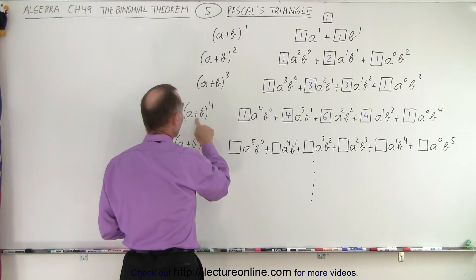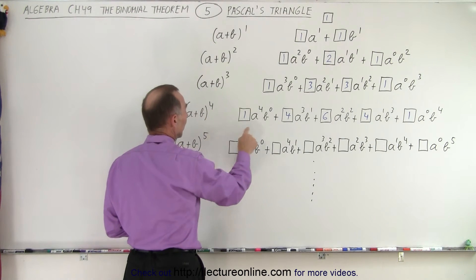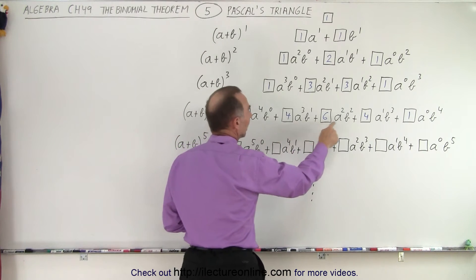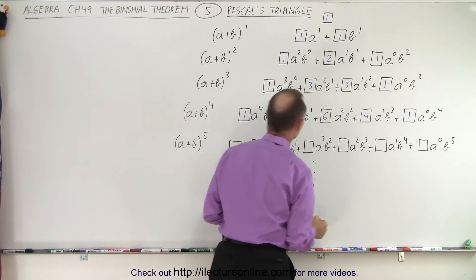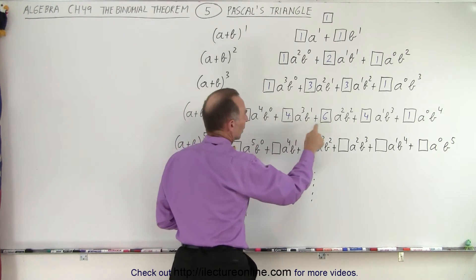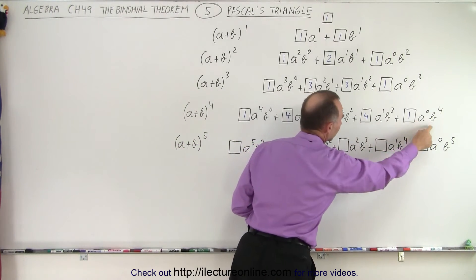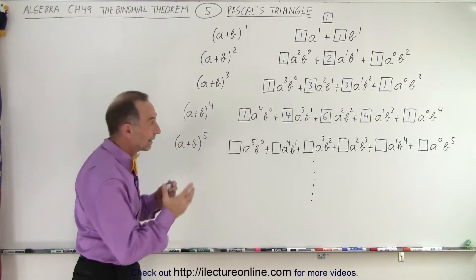Again, the exponents, since we start at a plus b to the fourth power, we have a to the fourth, a cubed, a to the second power, a to the first power, a to the zero power, b to the zero, b to the 1, b squared, b cubed, b to the fourth power. And that's how we get that expansion.